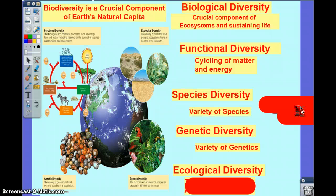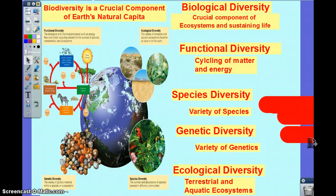The last type of diversity is ecological diversity — variety of ecosystems. Variety of ecosystems, or even broader, a type of ecosystem like a biome. So ecological diversity means variety of land and aquatic ecosystems.